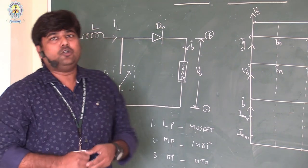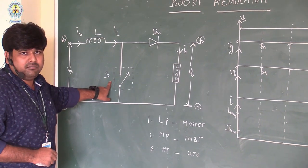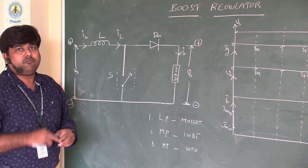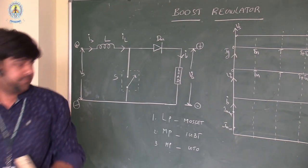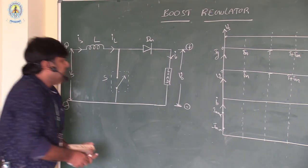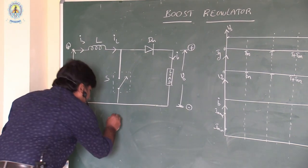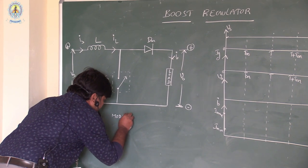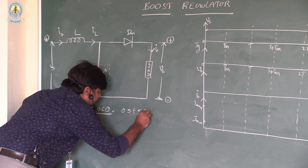The total operation can be divided into two modes: number one, when the switching device is on, and number two, when the switching device is off. Mode number one covers the interval zero less than T less than T-on.